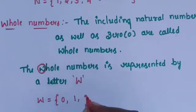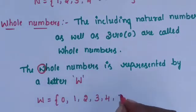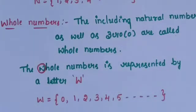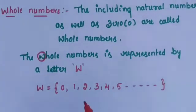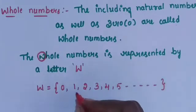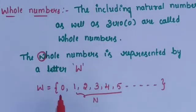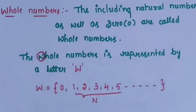Then W is equal to 0, 1, 2, 3, 4, 5 and so on. Including natural numbers as well as 0, then it is called whole numbers.